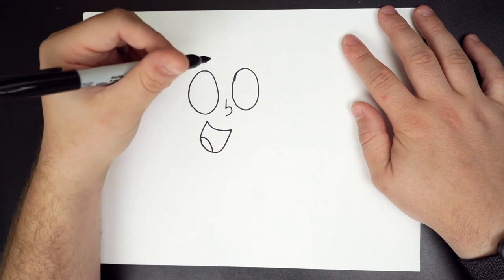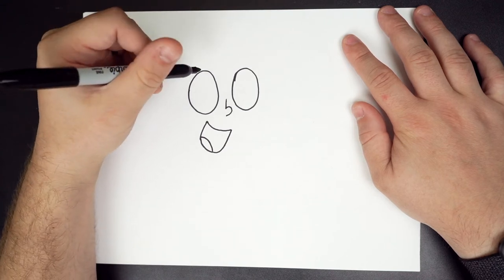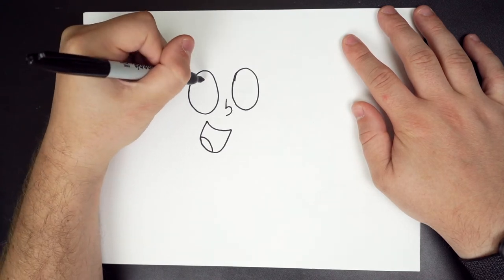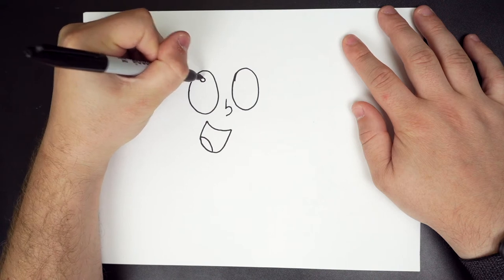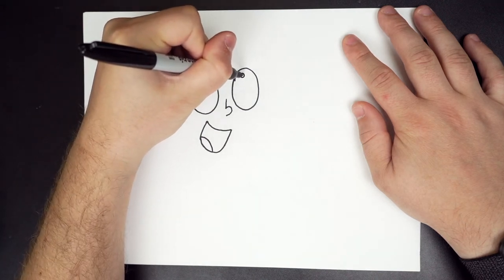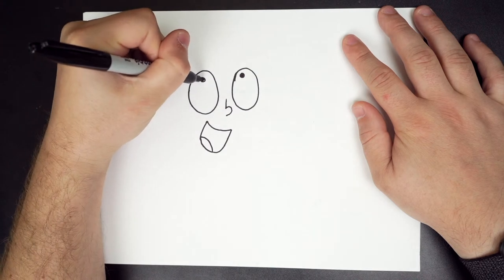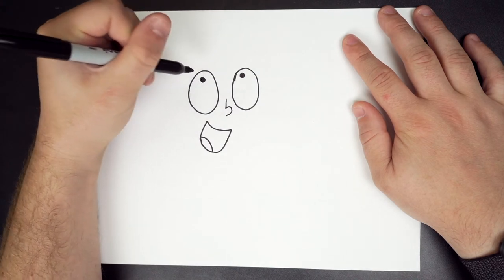And then what we're going to do is, we have her eyes. We're going to do just a little dark circle. Just color that in right now if you wanted. Okay.